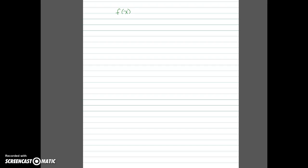The first thing we need to do is find the inverse of this rational function. Before doing that, let's talk about the domain. The denominator cannot be 0, so as long as x is not equal to 5 we are good to go — there is a vertical asymptote at x equals 5. For the range, we look at the horizontal asymptote. Since the degrees are the same, we have a horizontal asymptote at y equals 1, and the function never crosses it, so the range is all values of y except 1.